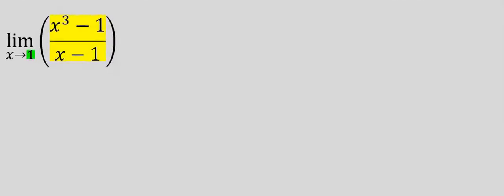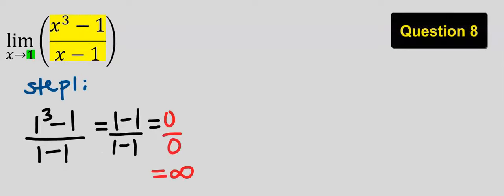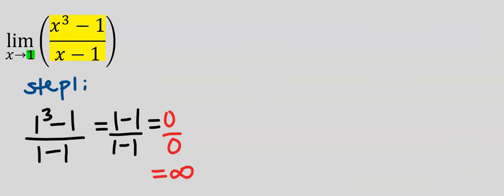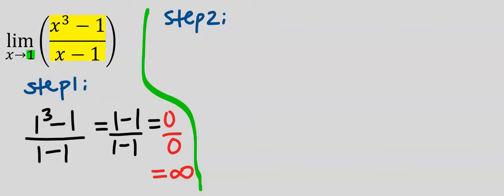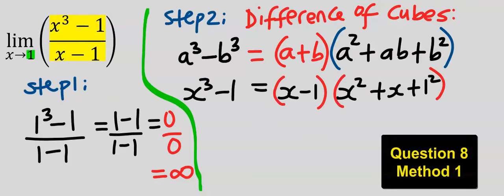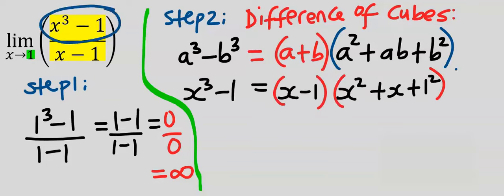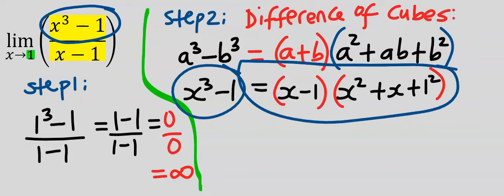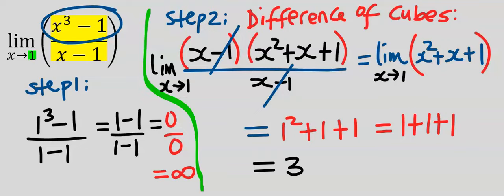Next, let's consider this question. Step 1 is to plug in by direct substitution, and by direct substitution we get undefined. Step 2: we can apply two different methods. Because of the presence of the cube, we can apply the difference of cubes to the numerator only. Applying the difference of cubes factorization gives us an answer of 3.